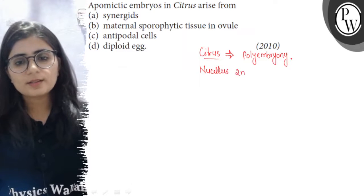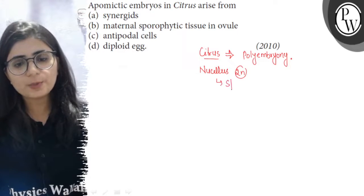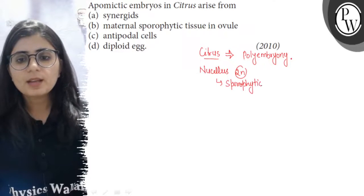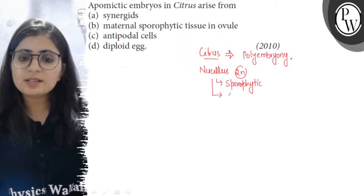The nucellus cells are sporophytic, meaning they are diploid cells, and the cells of nucellus are present outside the embryo sac.